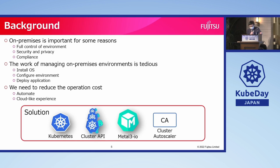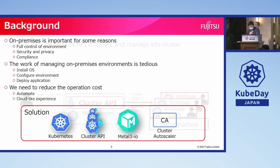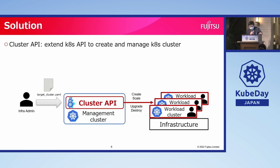Kubernetes, which we are all very familiar with, is a great tool for deploying applications. And the other three projects can be used to manage the infrastructure. The first is Cluster API — it extends the Kubernetes API to create and manage Kubernetes clusters, and is a Kubernetes community sub-project created by SIG Cluster Lifecycle. It runs on a Kubernetes cluster called the Management Cluster, while the cluster it creates and manages is called the Workload Cluster.